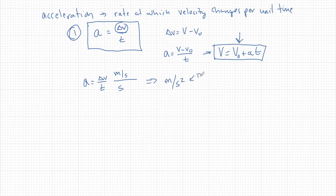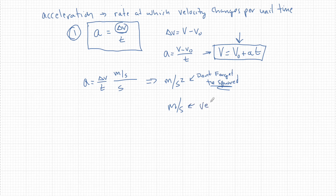Guys, don't forget this, please. If we use the traditional definition of delta V over t to look for the units — on top we have meters per second, and time is seconds. So the unit for acceleration is meters per second squared. So many times I've had to take points off a test because students write meters per second. That tells me a velocity, not an acceleration. That's a completely different variable. Please — meters per second squared.